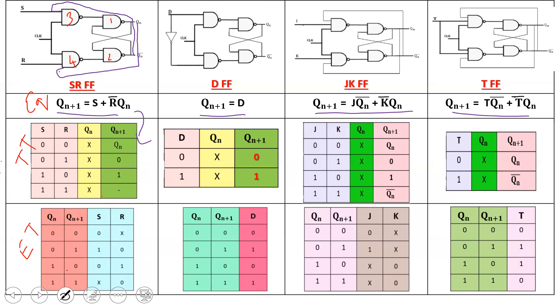Coming to the truth table, SR flip-flop has two variables with four combinations. S=0, R=0: no change in output. S=0, R=1: flip-flop is reset. S=1, R=0: flip-flop is set. S=1, R=1: dash — this is an unused, invalid or indeterminable state.